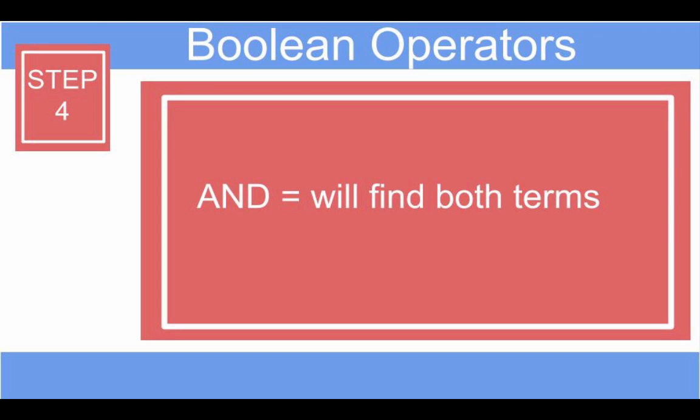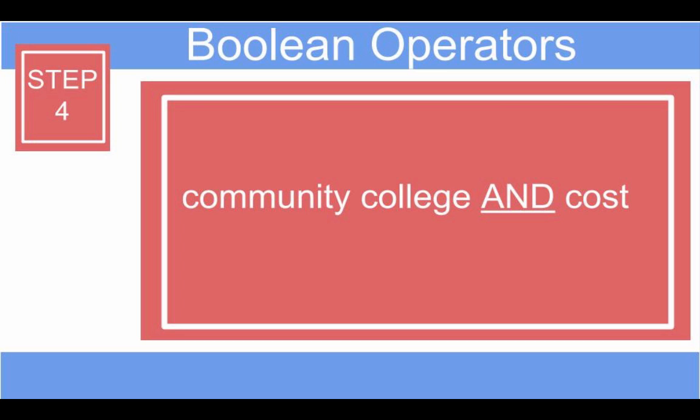Using AND will find both terms. For example, community college AND cost will find articles with both community college and cost mentioned.